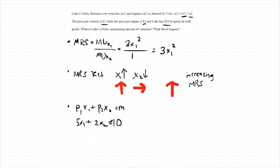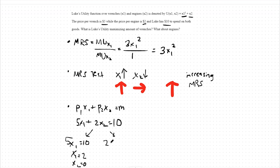If we zero out the amount of good 2 we purchase and say we purchase all of good 1 instead, we're left with 5x1 equals 10, so x1 equals 2 and x2 equals 0. If we zero out how much of good 1 we purchase and purchase all of good 2 instead, we're left with 2x2 equals 10, so x2 equals 5 and x1 equals 0.